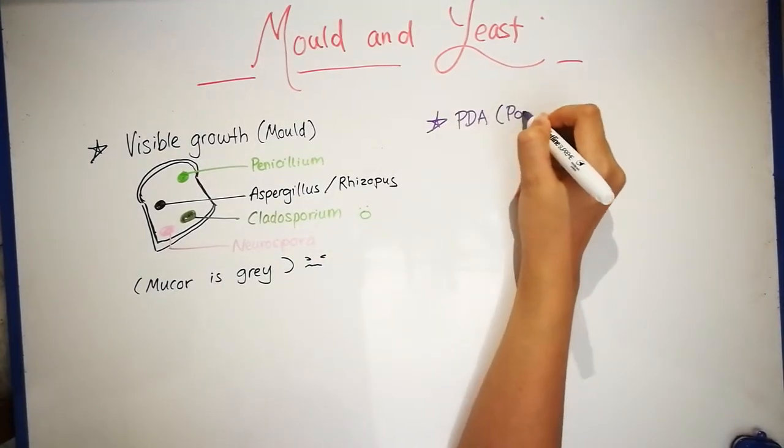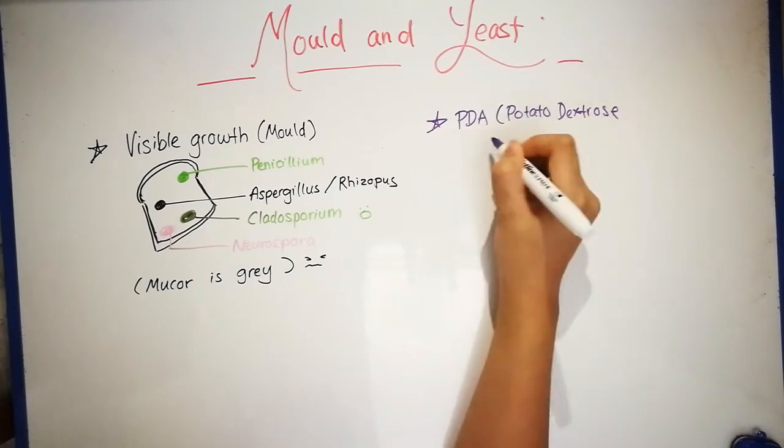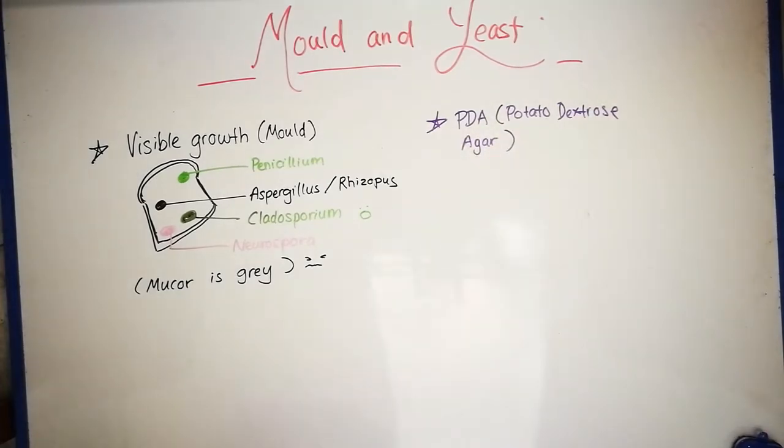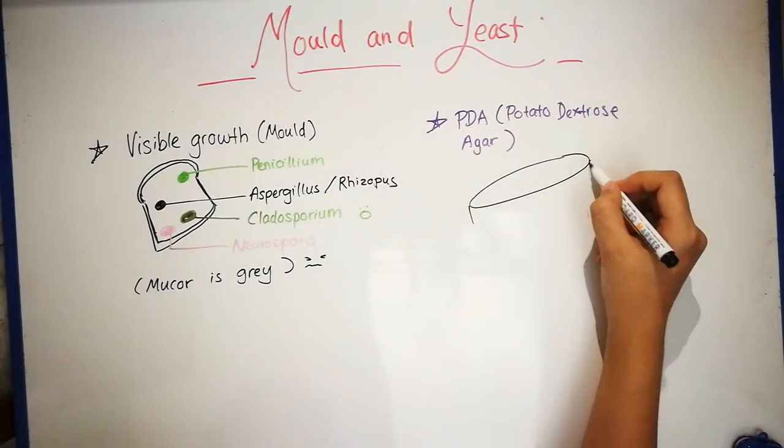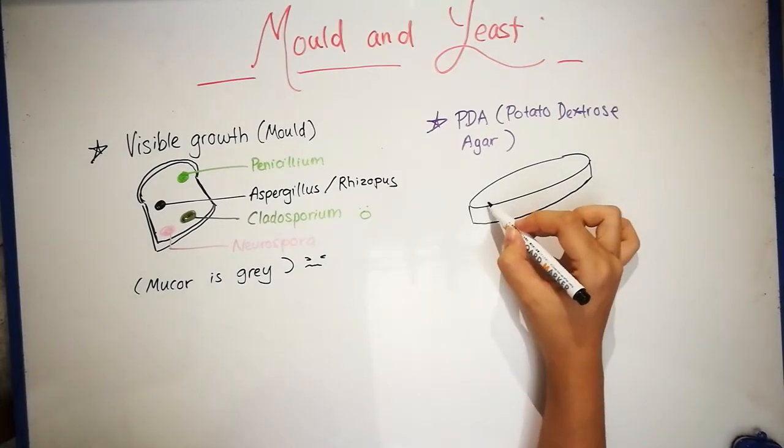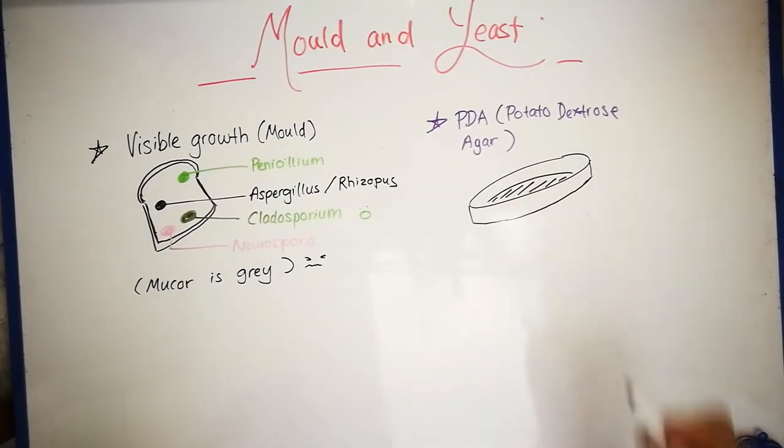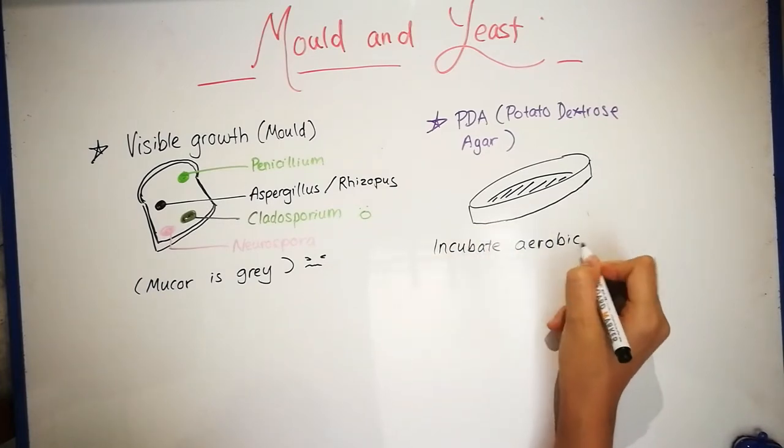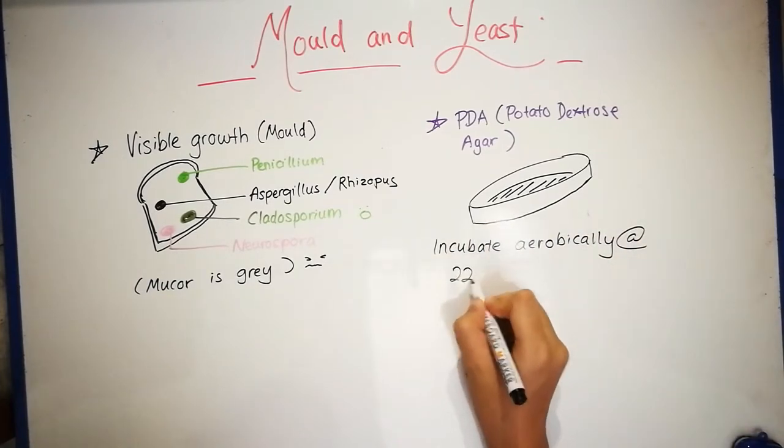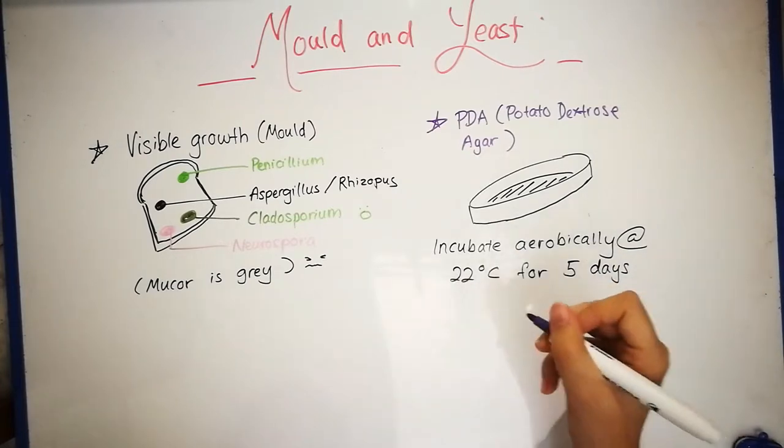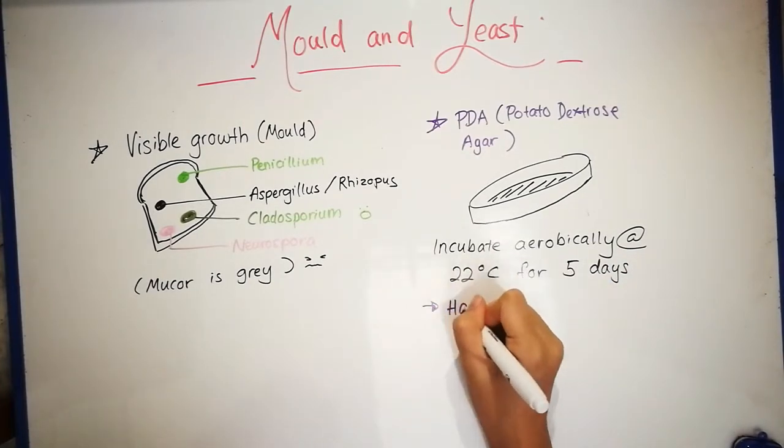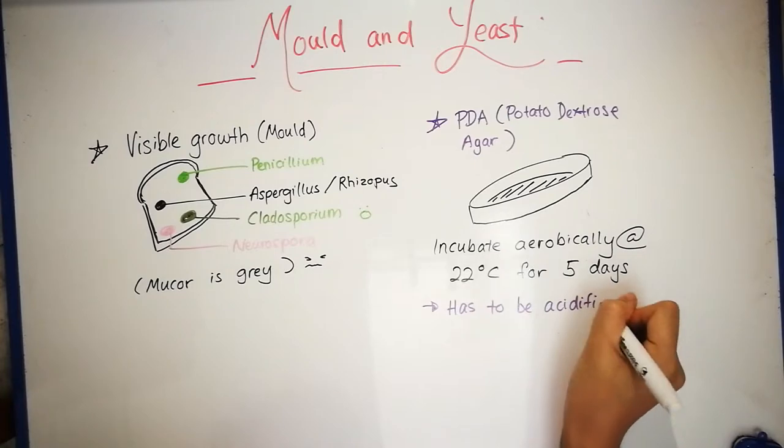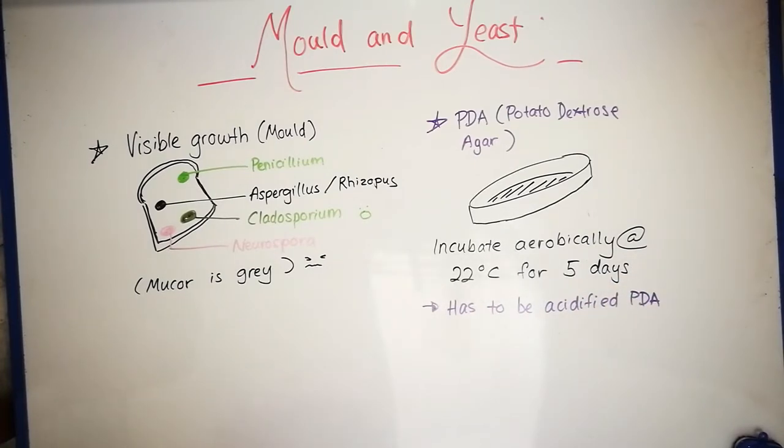Another method would be potato dextrose agar, which is used to detect fungi. It is incubated aerobically at 22 degrees Celsius for 5 days, and it also has to be acidified, as it lowers the pH of the agar.